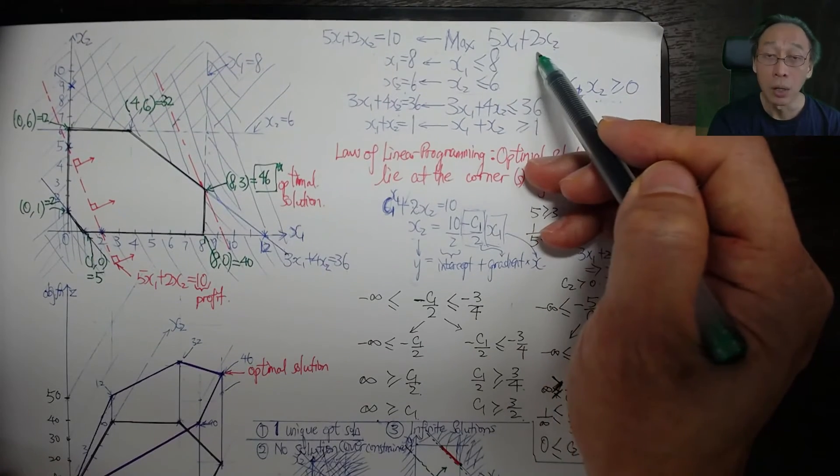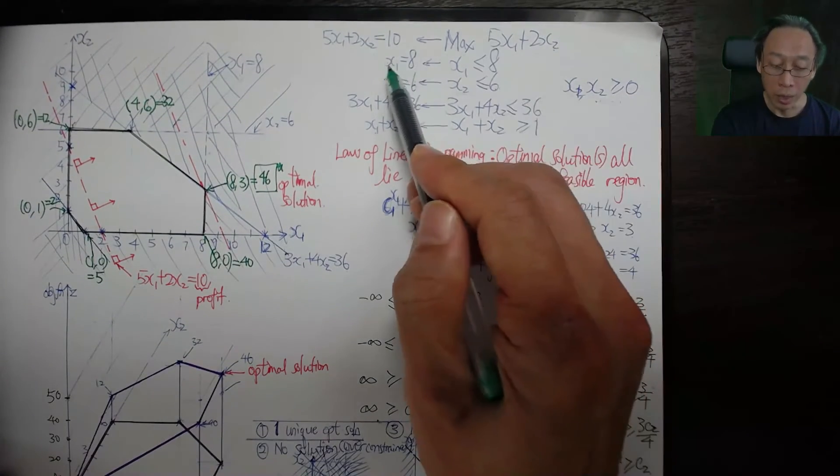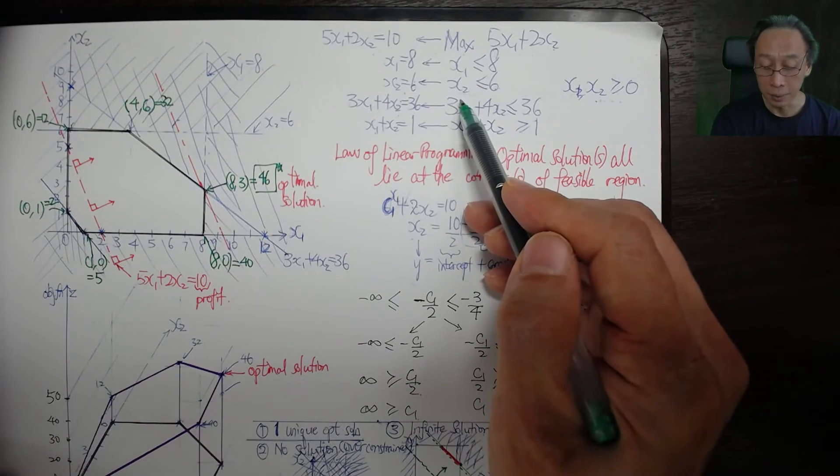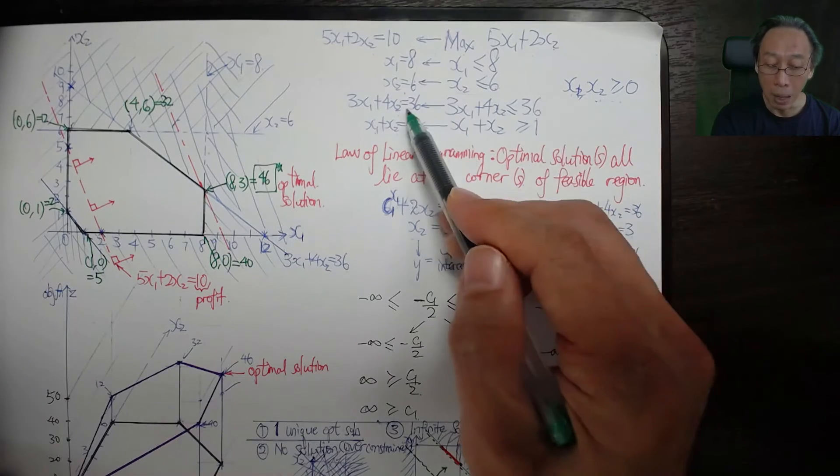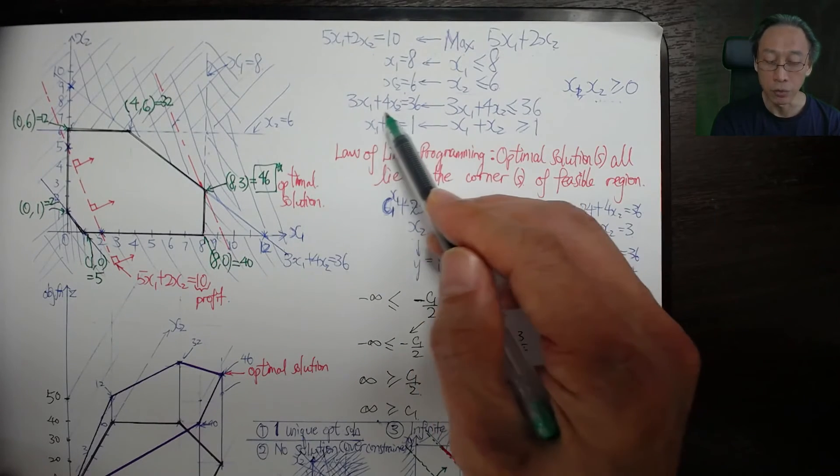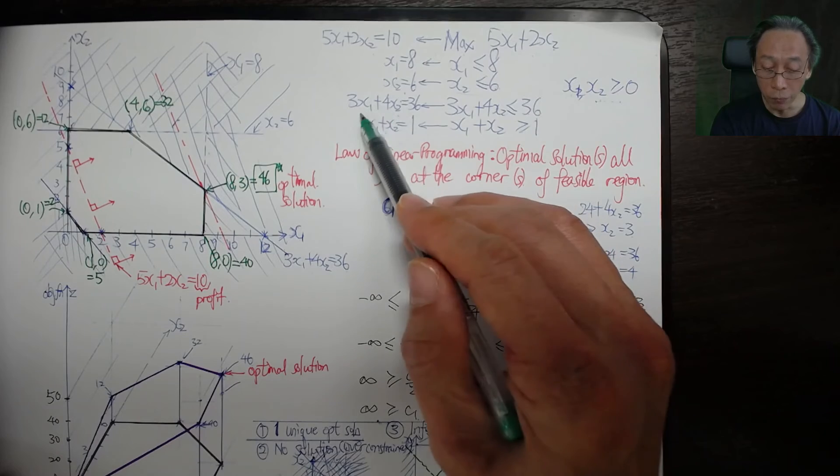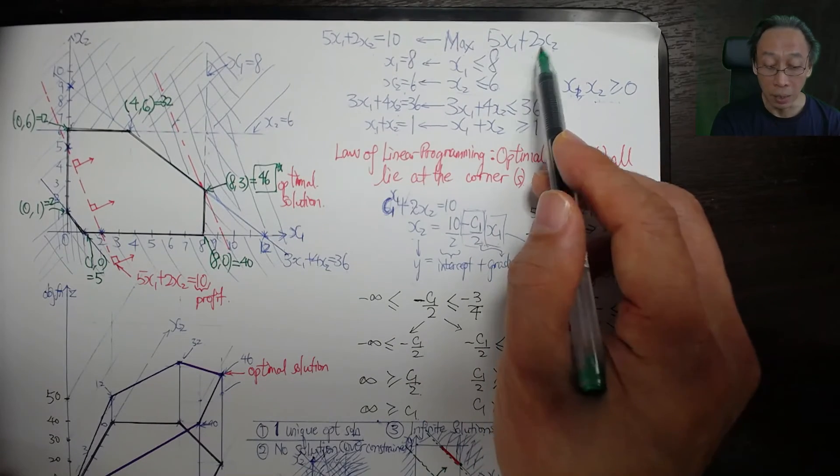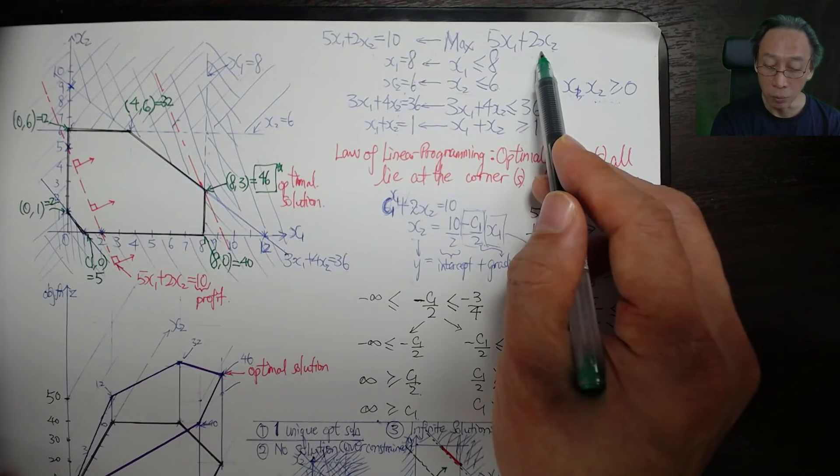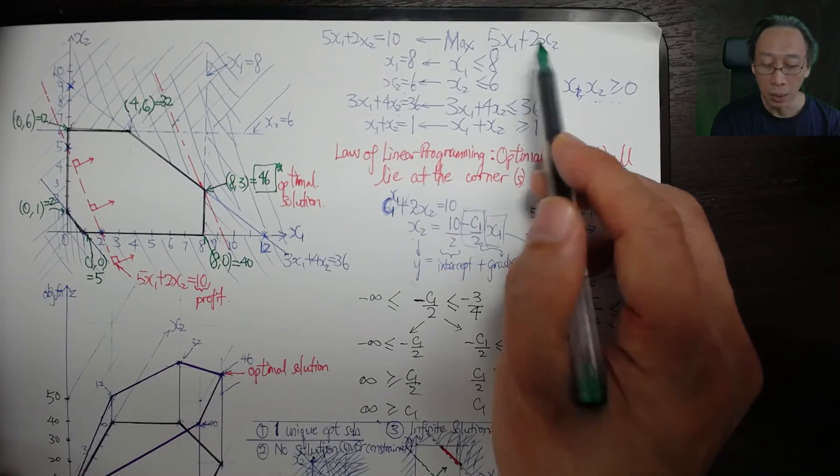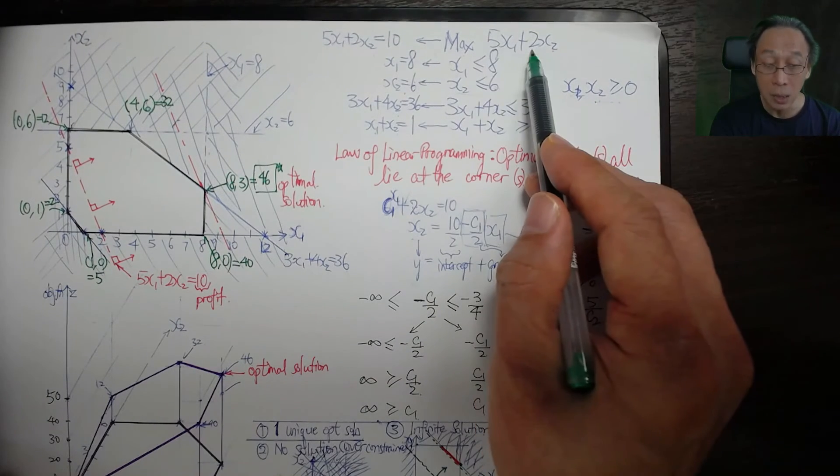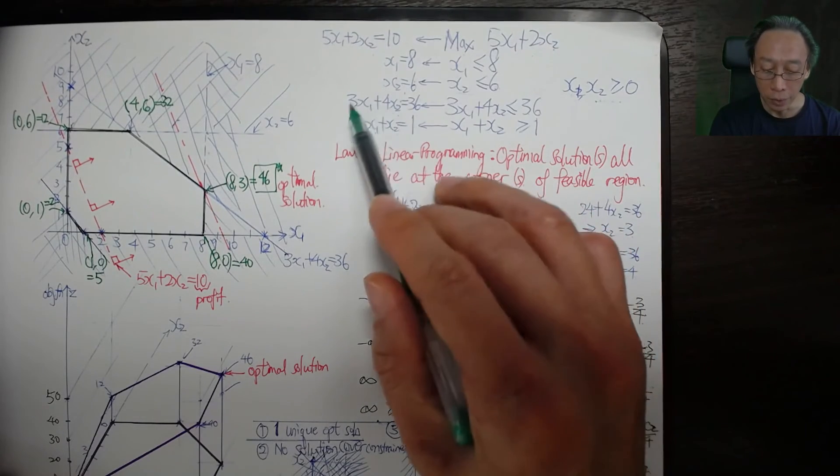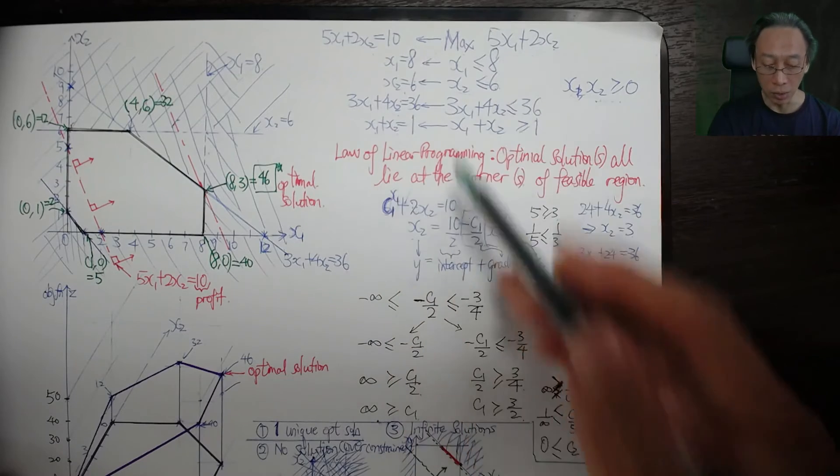And see if it is a multiple of the constraint line gradient. So 3, 4 here can be, if it is 3, 4 then it's clear, but it can also be 6, 8, it can also be minus 3 minus 4, it can also be 30, 40, so long as it's a constant multiple of the gradient, and that will give us the potential situation of infinite solutions.